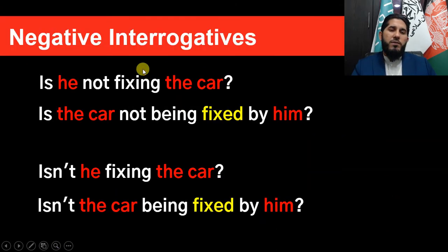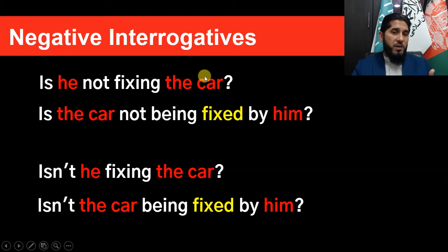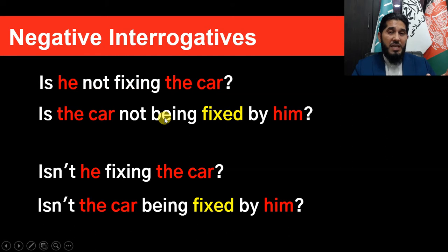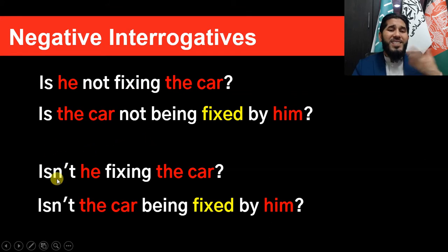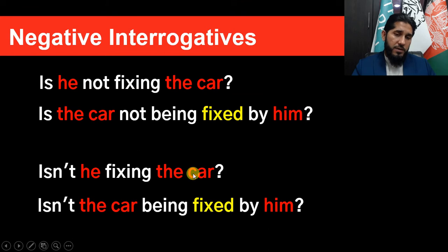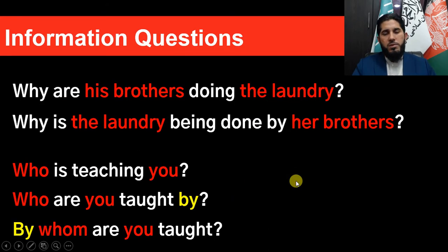For negative interrogatives, the complete form: 'Is he not fixing the car?' 'He' is the subject — the doer of the action 'fixing' — and 'the car' is the receiver. In passive: 'Is the car not being fixed by him?' The verb is changed to past participle and placed after the auxiliary 'being,' and the subject of the active sentence becomes the object of the preposition. The short form, common in spoken English: 'Isn't he fixing the car?' becomes 'Isn't the car being fixed by him?'